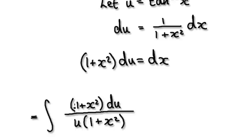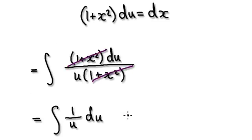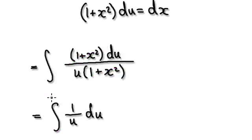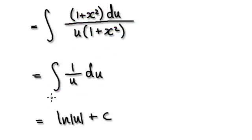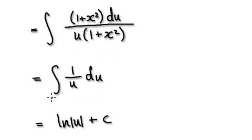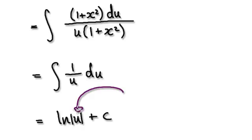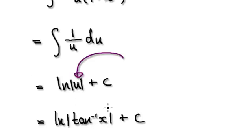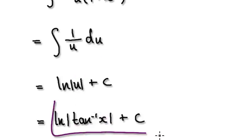So we are at this stage here, these two will cancel out, giving you this. Now, integrating this will give you the natural log of the absolute value of u. Earlier we said let u equal inverse tan of x. So overall, the answer will be this.